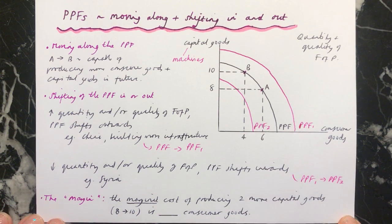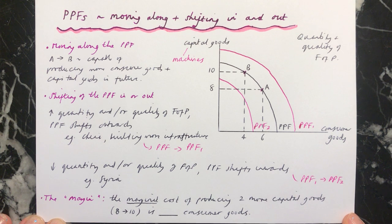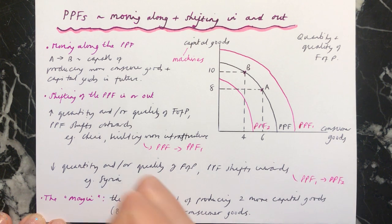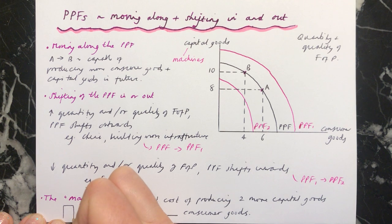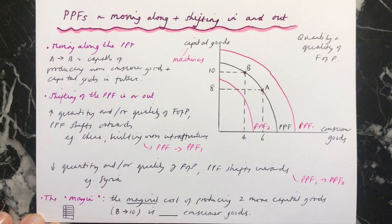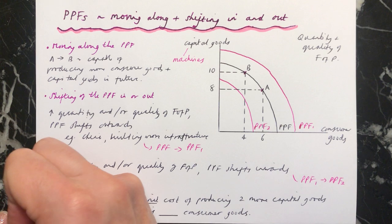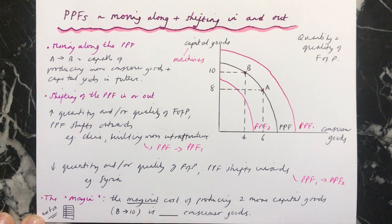The final thing I want to cover in this video is something called the margin. We're going to be looking at this in theme three in particular, but also at the end of theme one. The margin is something you need to know about in economics in general. If you think about a page of paper with lines on it, you have an extra piece of paper inside the margin — it's about having an extra amount of something. That's all you really need to know at this point: the margin is having an extra amount of something.